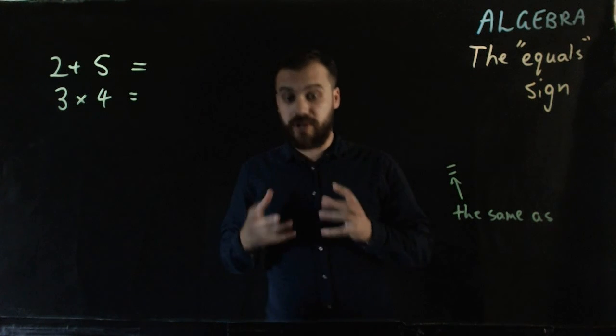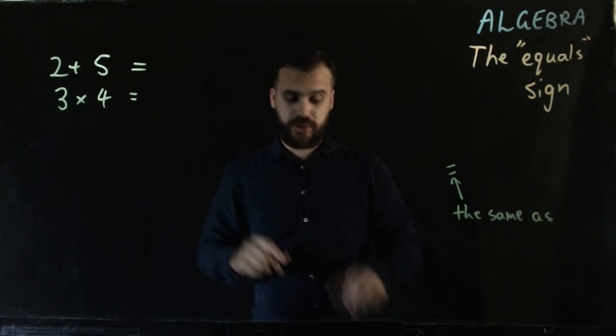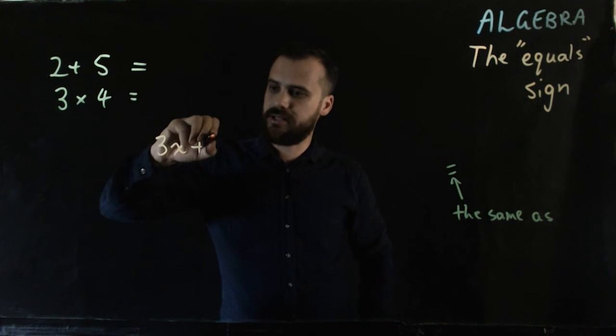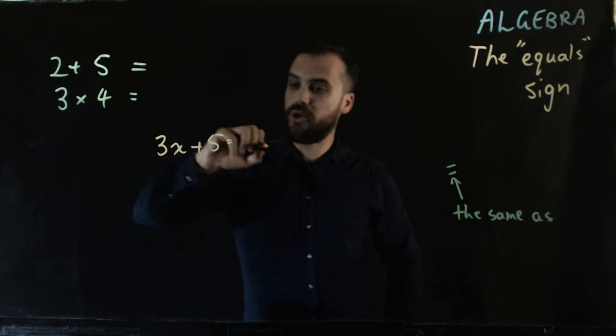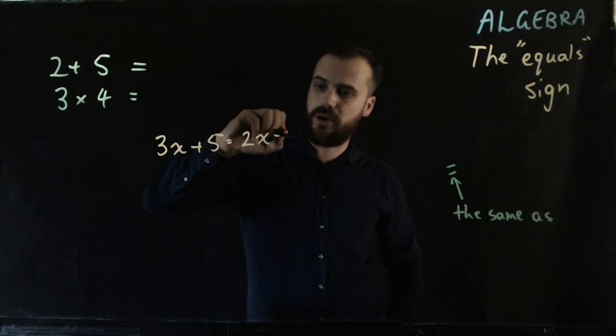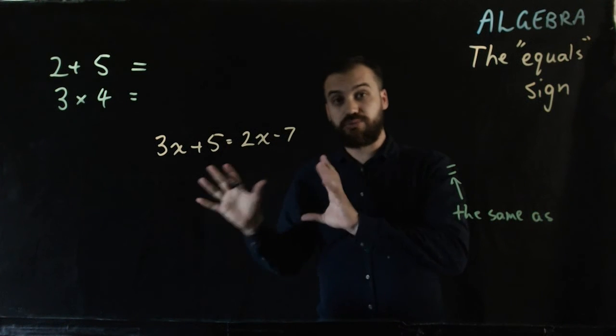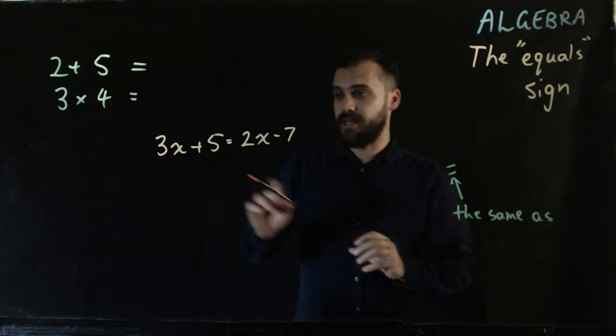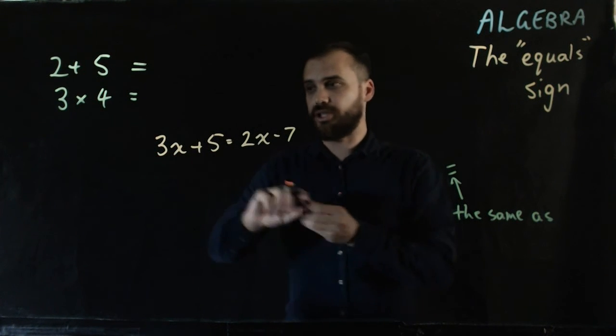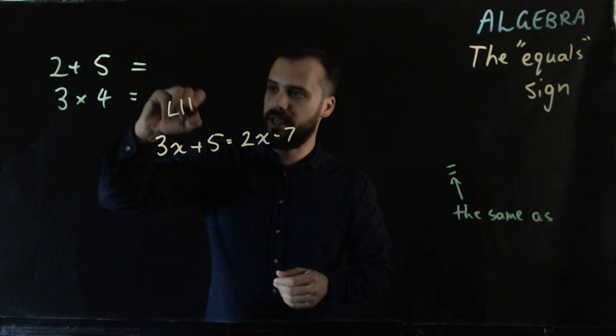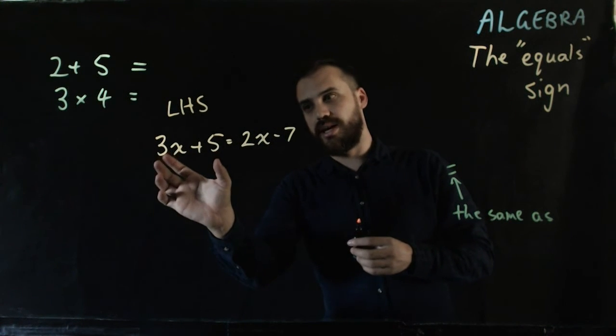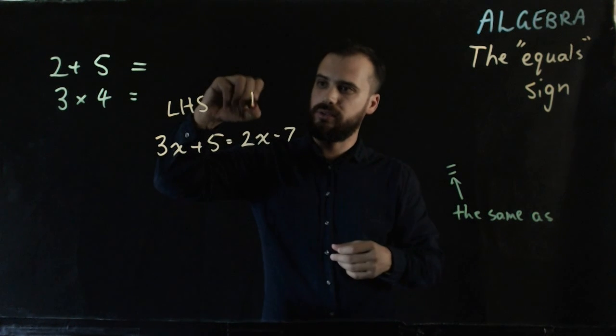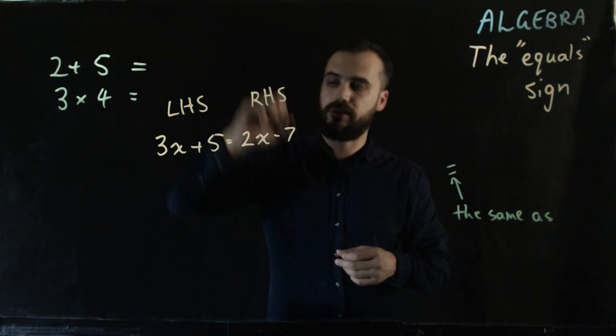Okay, so for instance, and I'm going to go back to algebra now. 3x plus 5 equals 2x minus 7. Now that looks really, really complicated. But all you need to understand is that this side, what we actually call the left-hand side, so 3x plus 5, is the same as this, what we call the right-hand side.